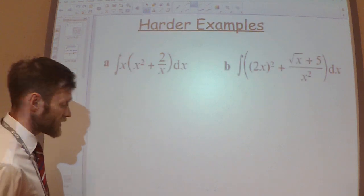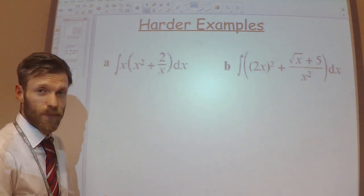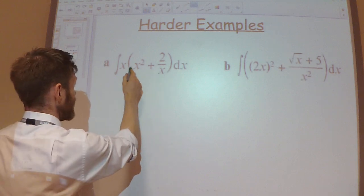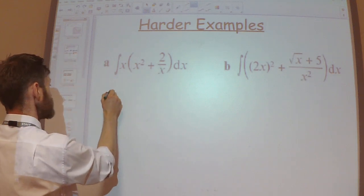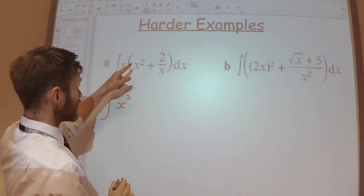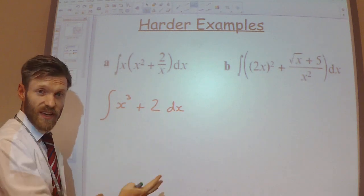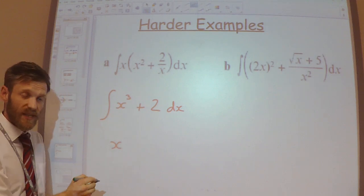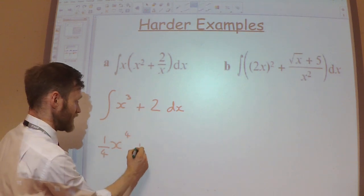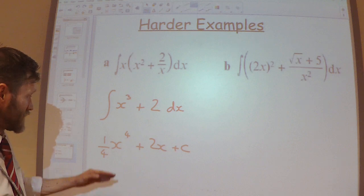Lastly, two more complicated examples where we need to be more careful. They look more complicated, but if we do some simplification first it should be pretty straightforward. The first one has brackets to expand before we can do any integration. Expanding: x times x² is x³, and x times 2/x is just 2. Now we can integrate both terms easily. x³ integrates to x⁴/4, and 2 integrates to 2x. Plus my constant c. That's the answer to this integral.